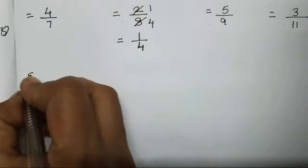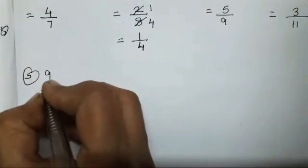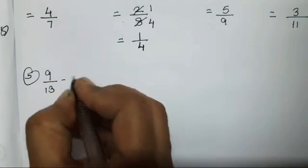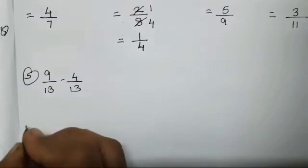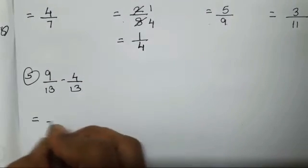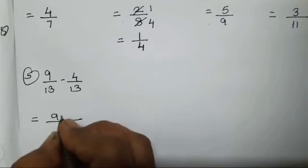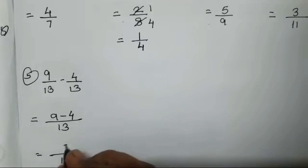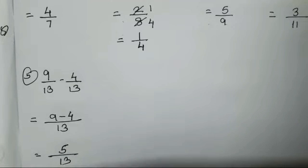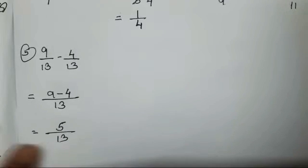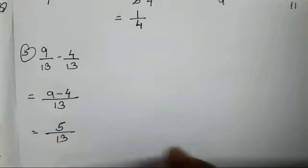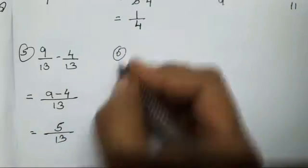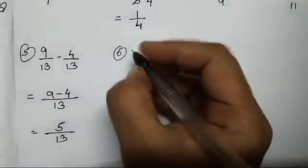The fifth fraction is 9 upon 13 minus 4 upon 13. We will write 13 once. 9 minus 4 is going to be 5. Do 5 and 13 come in one single table? No, it cannot be divided with the same number. So let's keep it as it is — this is your answer.